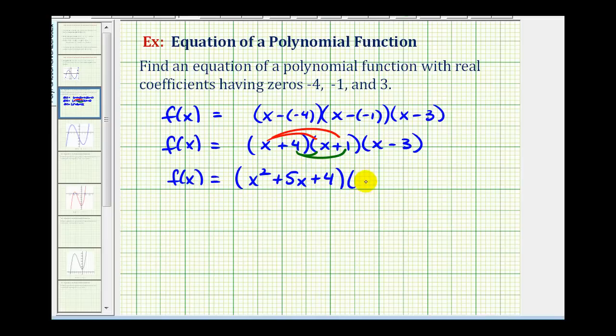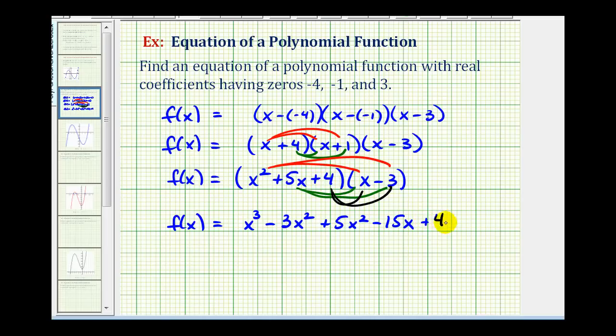So we have this trinomial times the binomial x minus 3. Multiplying these two, we'll have six products. One, two, three, four, five, and six. So we'll have f of x equals x to the second times x, that's x to the third. X to the second times negative 3, that's negative 3x squared, or minus 3x squared. Then we'll have 5x times x, that's 5x squared, so plus 5x squared. 5x times negative 3, that's negative 15x, or minus 15x. And then we have 4 times x, that's plus 4x. And then we have 4 times negative 3, that's negative 12, so we have minus 12.